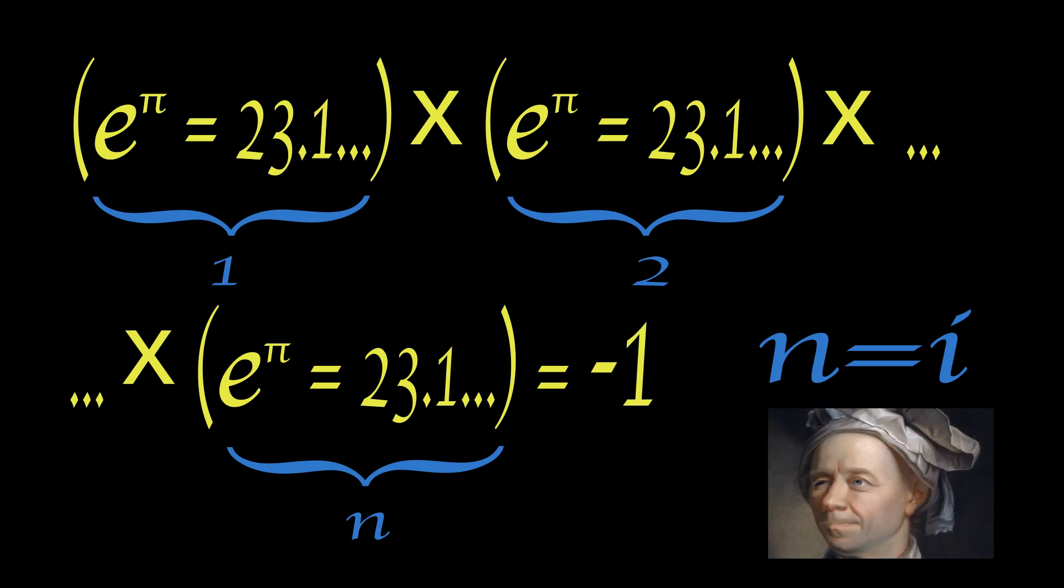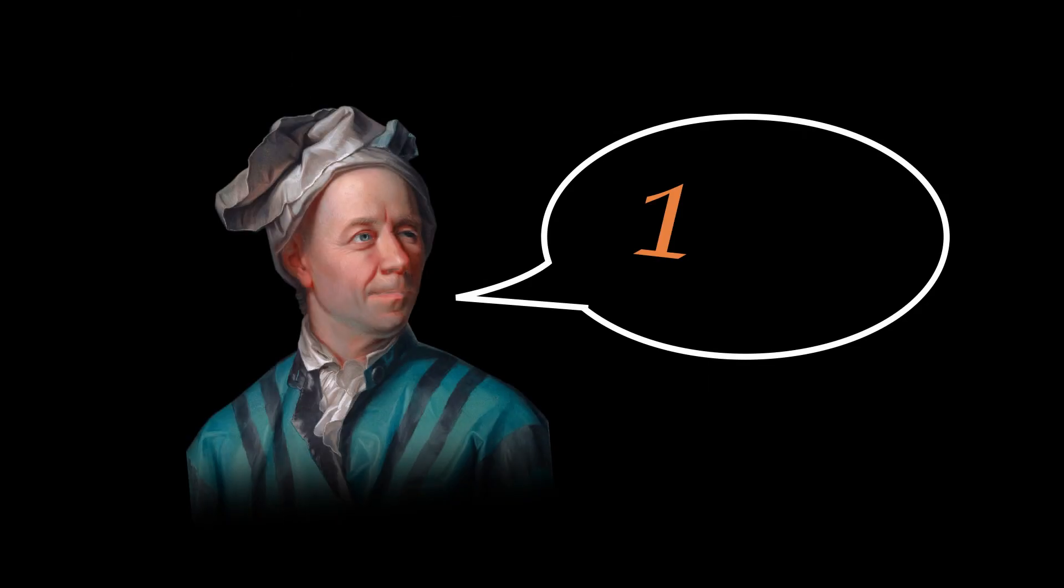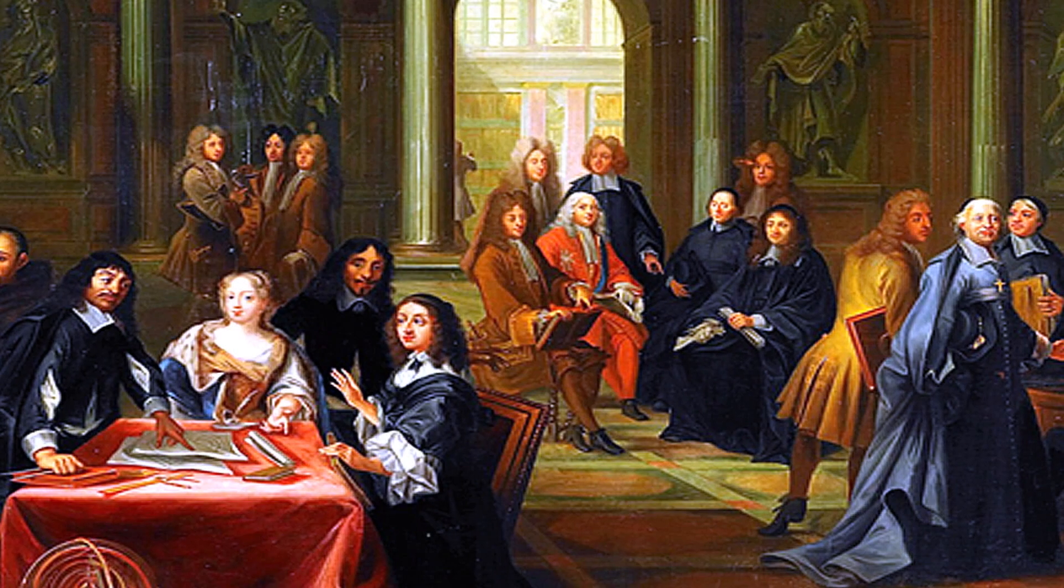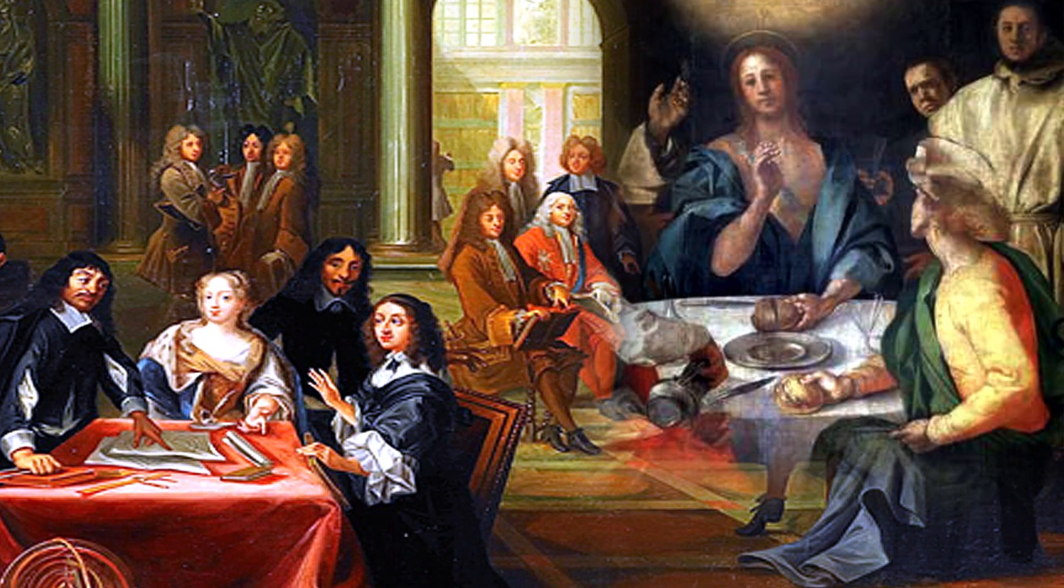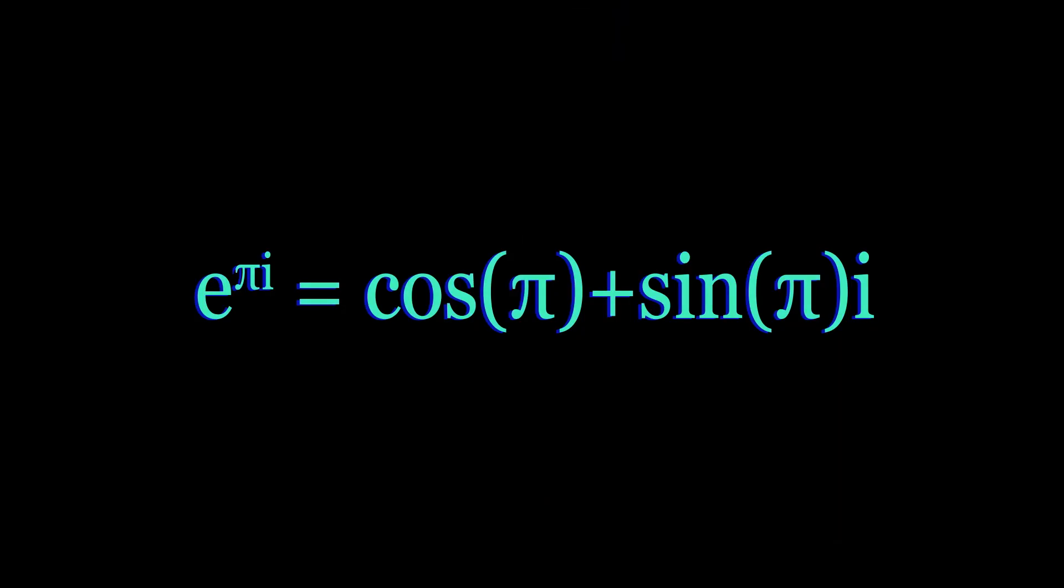Maybe because Euler just freaking says so. That's it. It's dark magic. Clearly inspired by the devil, Euler can make any number equal any other number. By the power of Satan. Oh sure, back in those days, people talked a lot about being religious and inspired by God and all that. But what the heck is this? Come on.